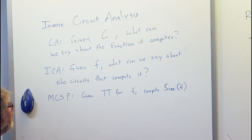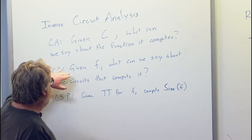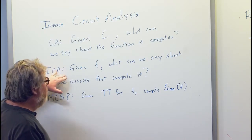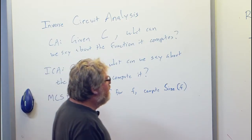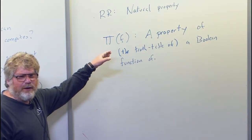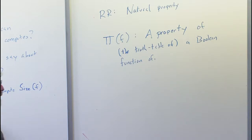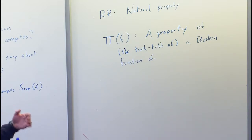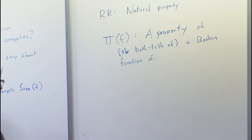So what do we mean by that? Here we're talking about what is a generic inverse circuit analysis problem. It's just a property of the truth table of a Boolean function that a function might have or not, but it should have something to do with the circuit complexity of that function. They gave three axioms or conditions that a property could have. These conditions have a lot of knobs on them that can be moved to fit a variety of circumstances.